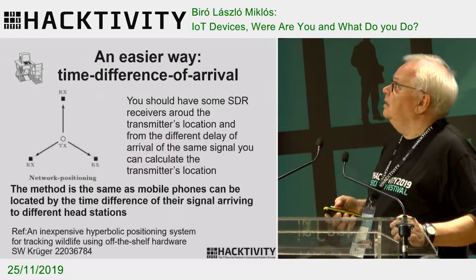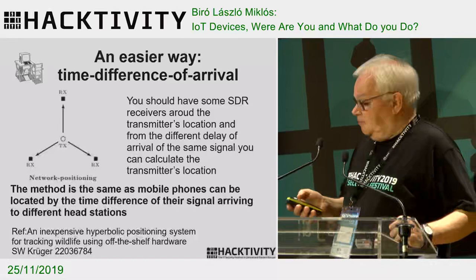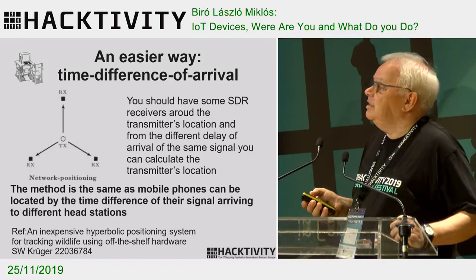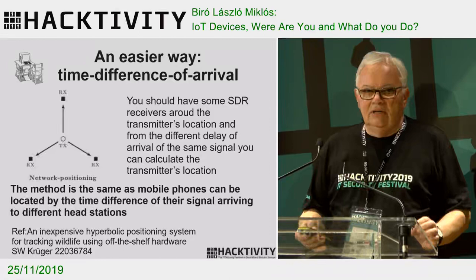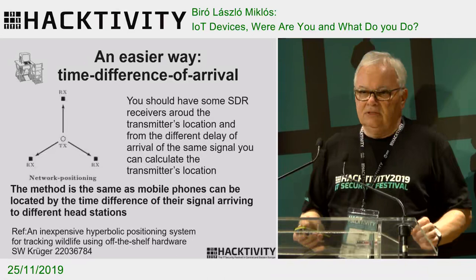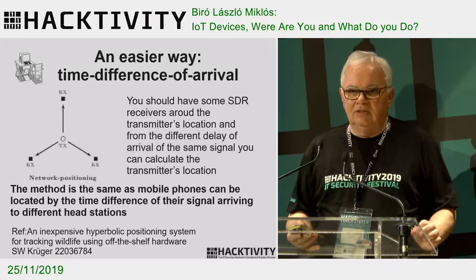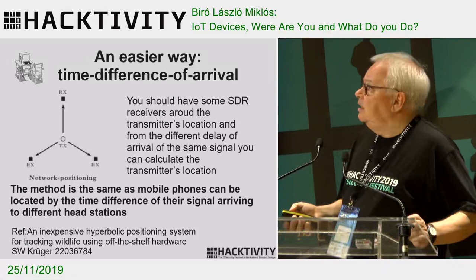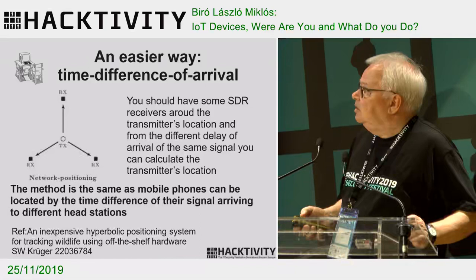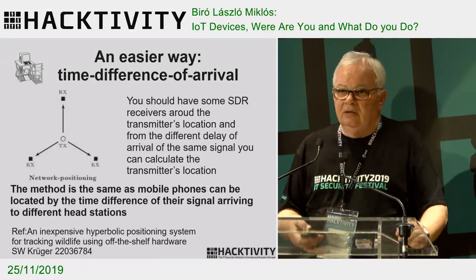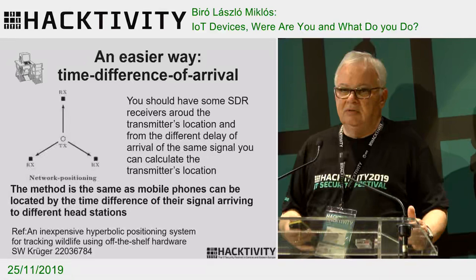The other way is the time difference method. If you have one transmitter and several receivers around it, the same signal will arrive at different times to each receiver. If you synchronize the receivers and measure the time differences, you can calculate the exact location of the IoT device. There is a very good dissertation that describes the full mathematical background very clearly.